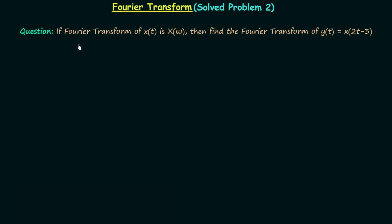In this question, it is given that the Fourier transform of signal x(t) is equal to X(ω), and we need to find the Fourier transform of signal y(t) which is equal to x(2t - 3). We are performing multiple operations on signal x(t) to get signal y(t), and we can obtain the Fourier transform of y(t) in terms of X(ω) by using the properties of Fourier transform.